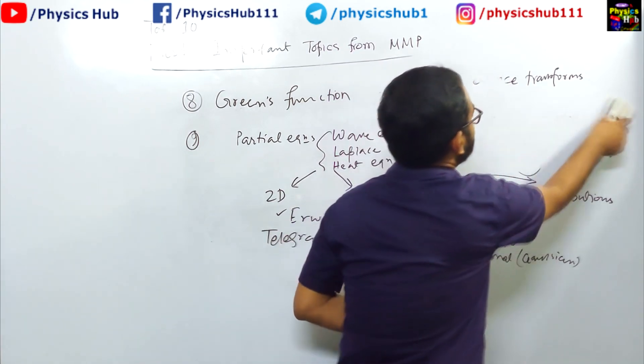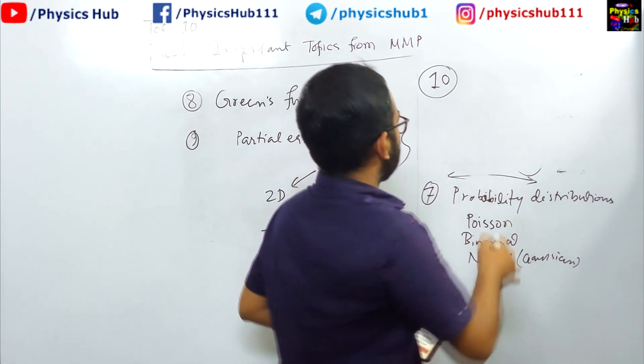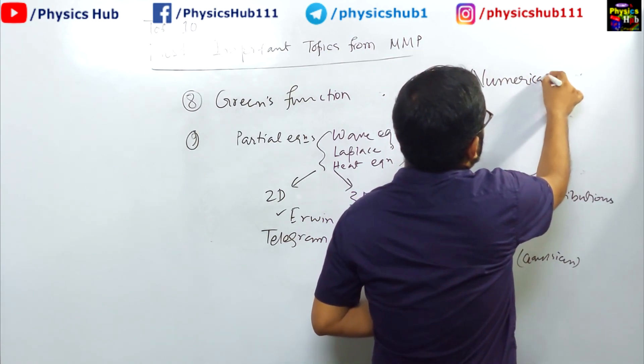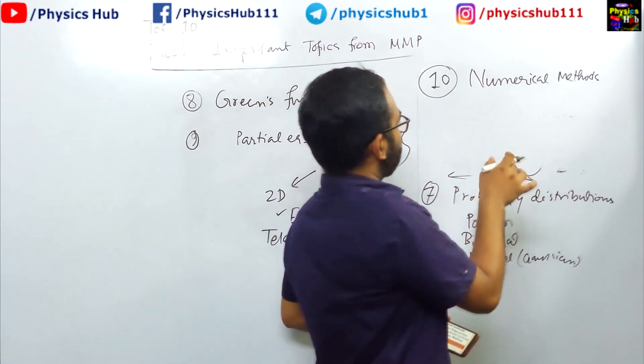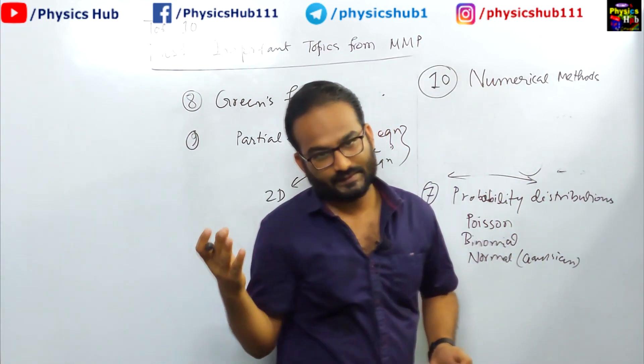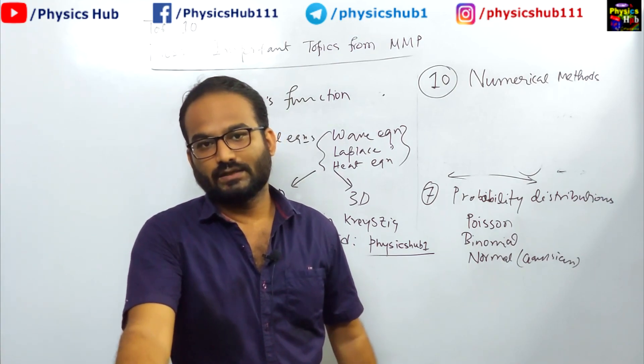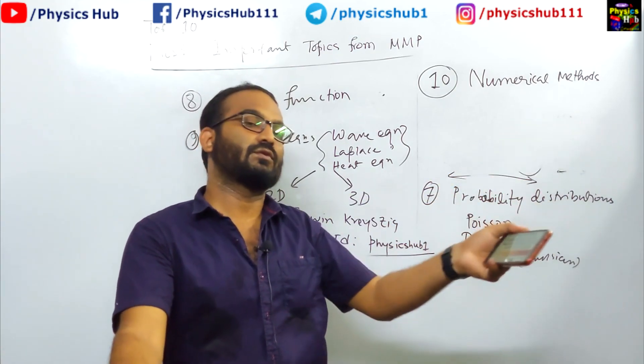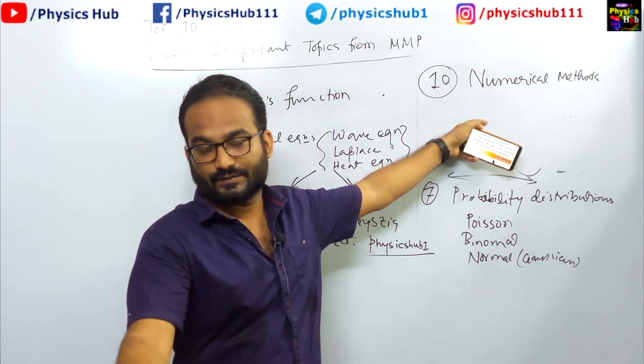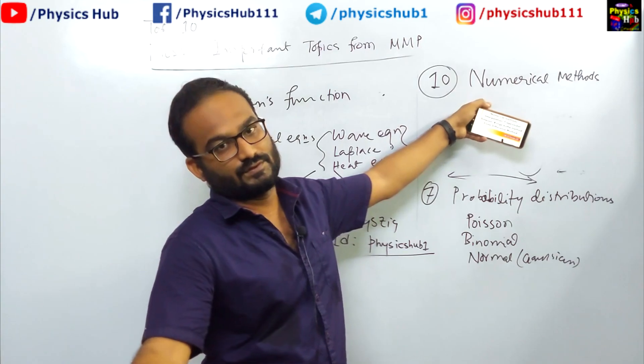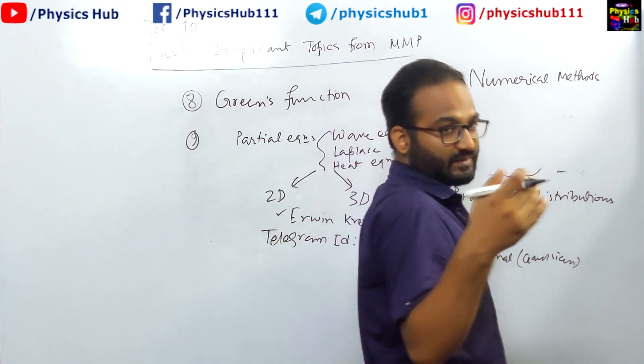Next, number 10 or the last topic which you should be dealing with is numerical methods. You will definitely get one question from numerical methods. It is highly probable because it has a lot of things. And numerical methods, why is it given in the physical science syllabus? Because after qualifying the JRF, you will be doing your research, and many of you will go for experimental or theoretical research. This numerical methods are the basis of theoretical research. That is why so much importance is given to numerical methods.